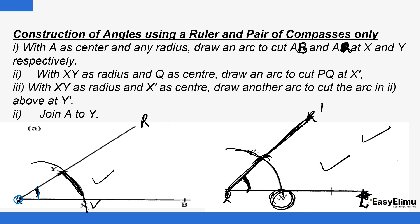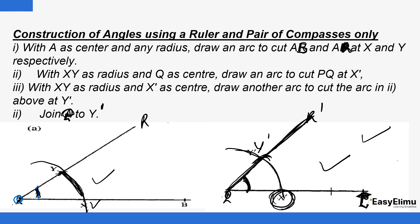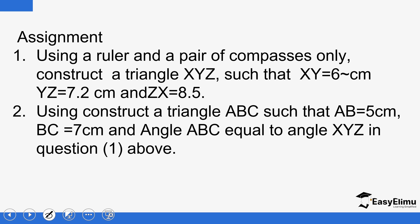The angle here will be exactly the same as the original angle. That's what you call transferring an angle. With XY as radius and X prime as center, draw another arc to cut the first arc at point Y prime. Join Q to Y prime. The angle R prime Q P will be exactly equal to angle RAB. That is basically how you do it. We have a few questions here to help you practice what we've been discussing. Until next time.